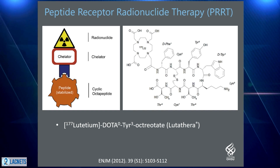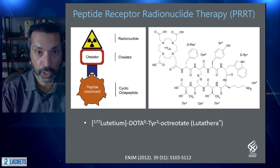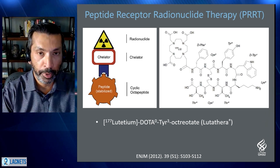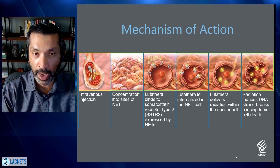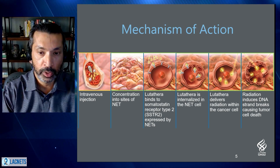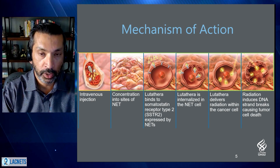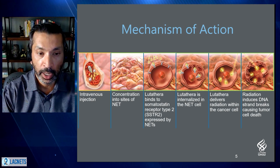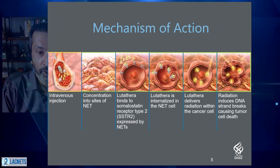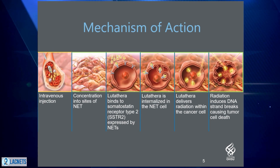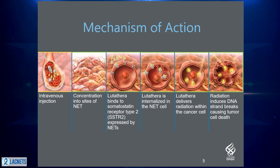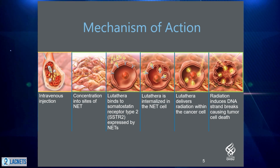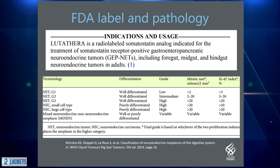Currently, there's only one FDA-approved version of PRRT, which is lutetium-177 dotatate, or brand name Lutathera. The mechanism of action is shown here — it's administered intravenously, then circulates throughout the body, and homes in on tumor cells because of the expression of somatostatin receptors on the cell. It's then internalized into the cell, and the radiation from the lutetium-177 causes DNA damage and eventually stops the cell from continuing to grow.